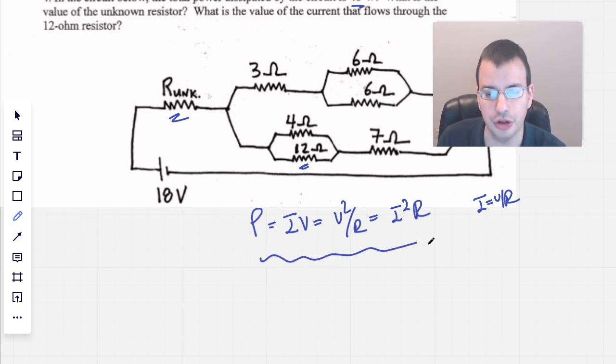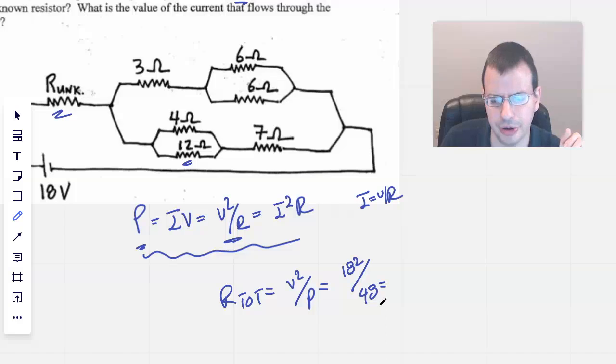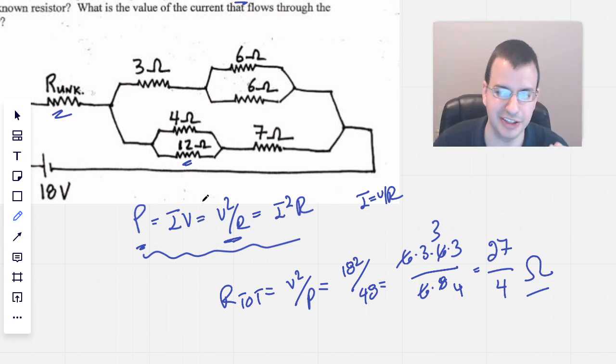Not all these equations are true for all circuits, but for this circuit you can assume they are. If we rearrange power for resistance, R total will be V squared over P. So we'll have 18 squared over 48. That's 6 times 3 times 6 times 3, which is 18 squared. 48 is 6 times 8. The 6s cancel, divide both by 2, and we have 27 over 4. That will be the total ohms of the whole circuit.